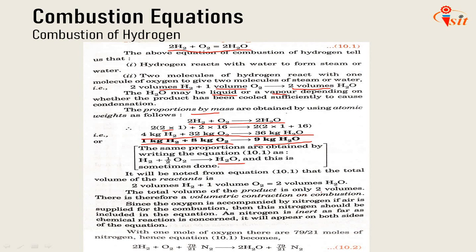With 1 mole of oxygen, there are 79/21 moles of nitrogen. By volume, 79% nitrogen and 21% oxygen. So the equation becomes: 2H2 + O2 + (79/21)N2 → 2H2O + (79/21)N2. We need to add nitrogen to both sides of the equation.